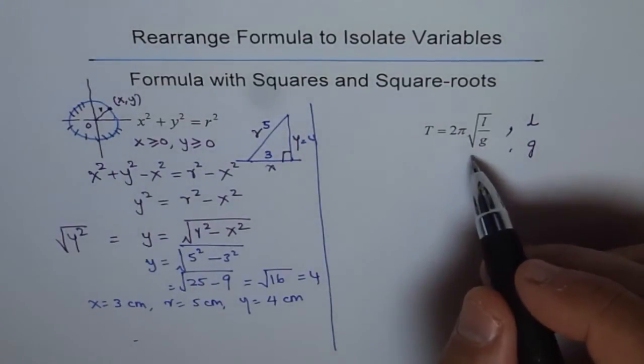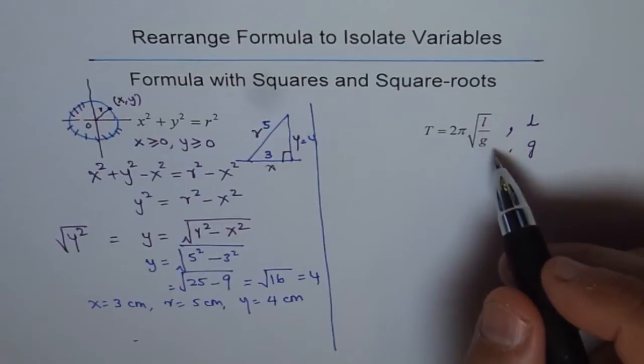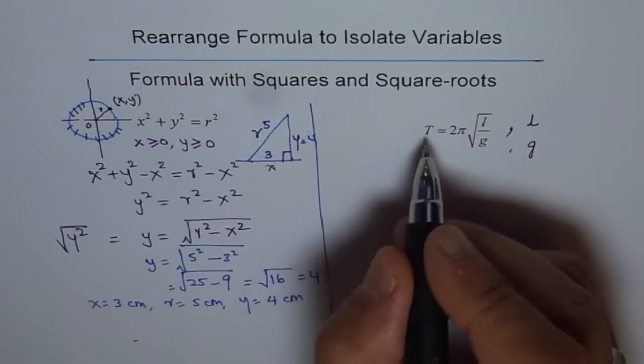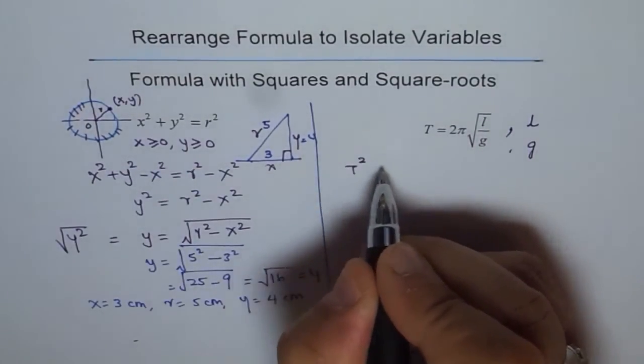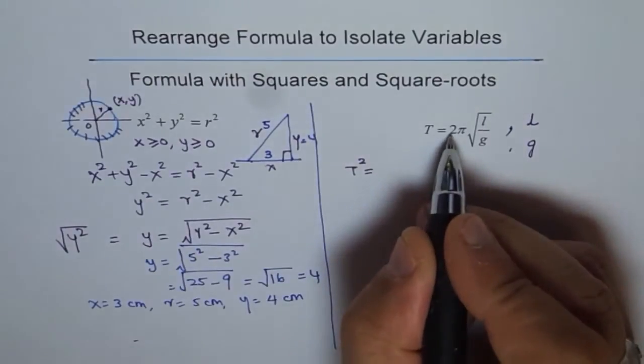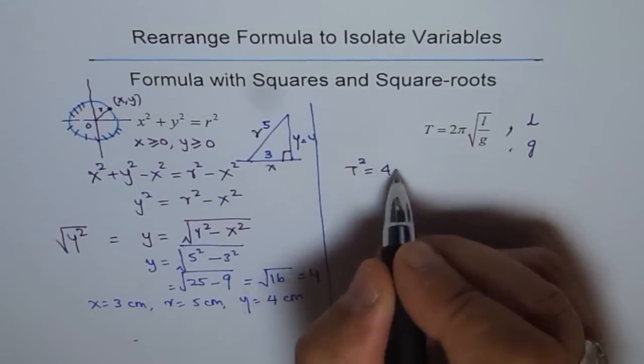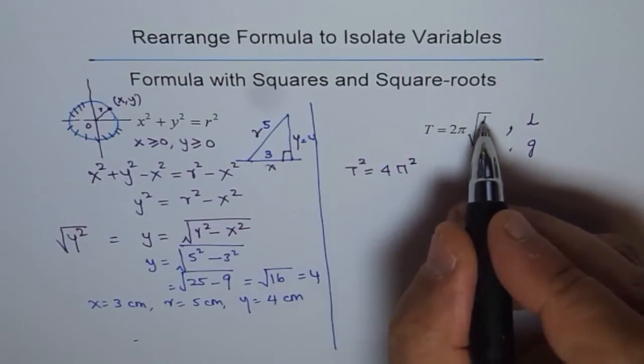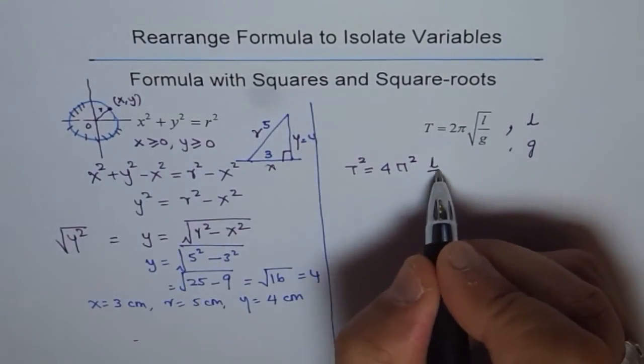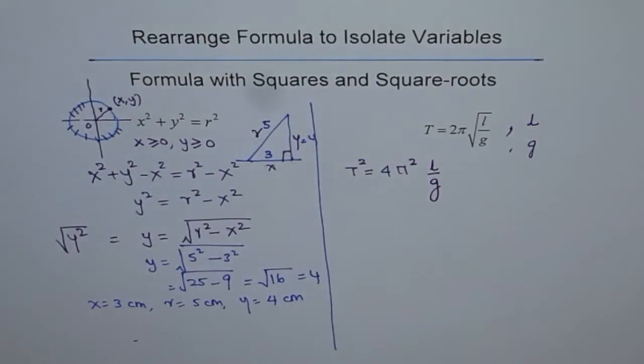Since there is a square root, let us square both sides. If we square both sides, we get T² = (2π)²(l/g). That is T² = 4π²(l/g). So that is what we get.